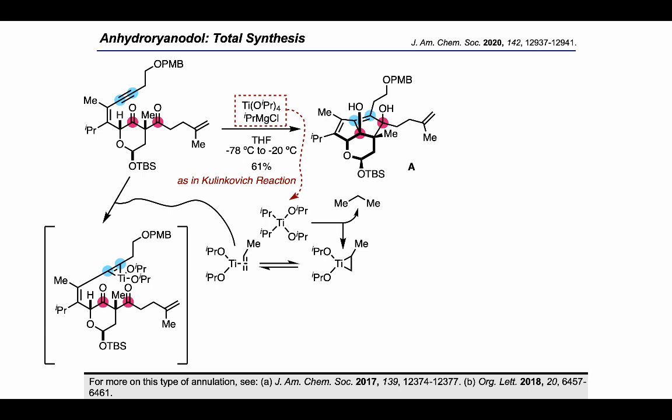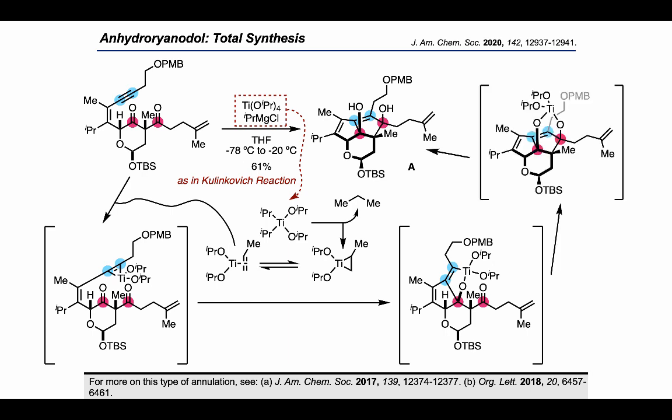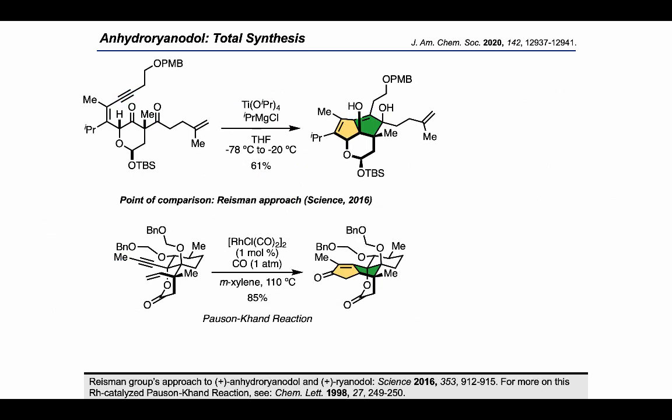After an initial addition of the titanacyclopropene to the proximal carbonyl, resulting in the first carbon-carbon bond formation, a second addition can occur at the distal carbonyl to form another carbon-carbon bond and close up the second ring. As a point of comparison, the Reisman group also used a pendant alkyne in an annulation that led to the formation of the same two rings, although in that case it was a rhodium-catalyzed Pauson-Khand annulation.